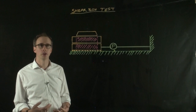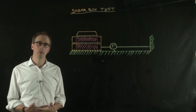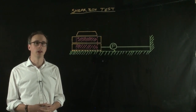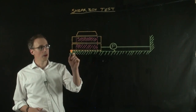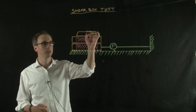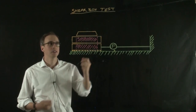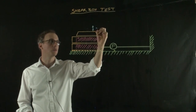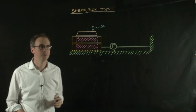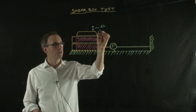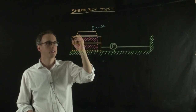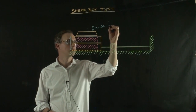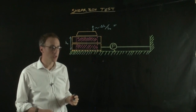To know when the sample has failed, we need to measure two other properties: shear strain and volumetric strain. In the shear box test, we use a displacement transducer that measures the displacement of the lid — whether the lid moves up or down during the test. This gives us the change in height of the sample, delta h. Dividing delta h by the initial sample height H0 gives us the volumetric strain.